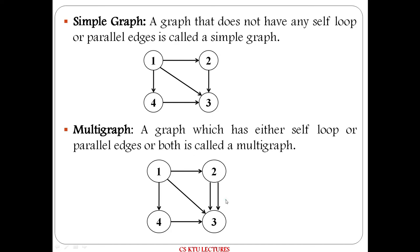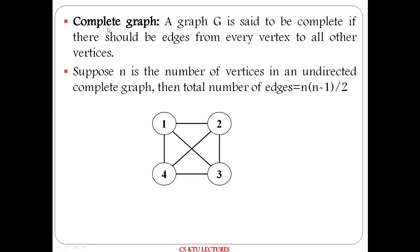A graph with at least one self loop or parallel edges is called a multigraph. This is an example of a multigraph showing parallel edges. Next, what is a complete graph? Every node is connected to every remaining node. It is called a complete graph. For N nodes, the number of edges is N × (N−1) / 2. In this case, 4 nodes gives 4 × 3 / 2 = 6 edges. This is the complete graph.